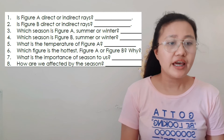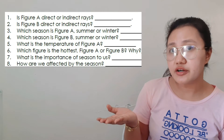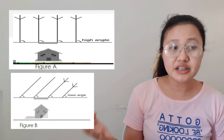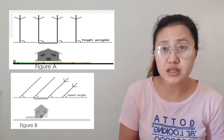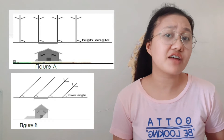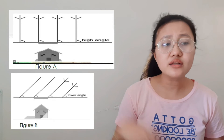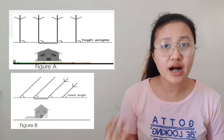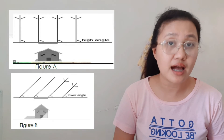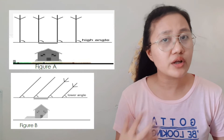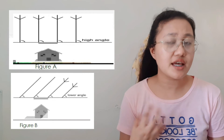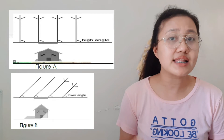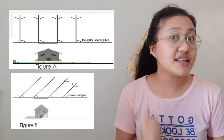For learning task number three, you're going to base your answer on the figure you can see here — meron tayong figure A at figure B. Sa figure A, it can be seen that it has a high angle — kapag high ang angle, the sun is directly hitting the object. While B has a lower angle — ibig sabihin, hindi siya directly natitamaan ng araw. There are eight questions and you're going to answer them using the figure or illustration shown here.